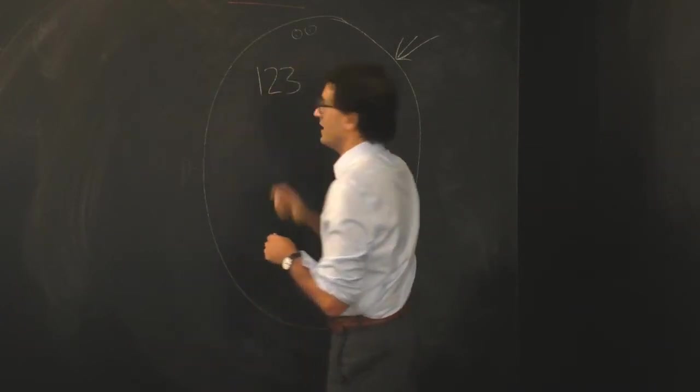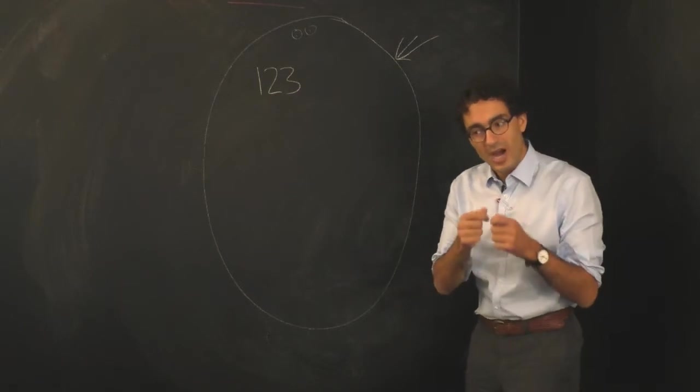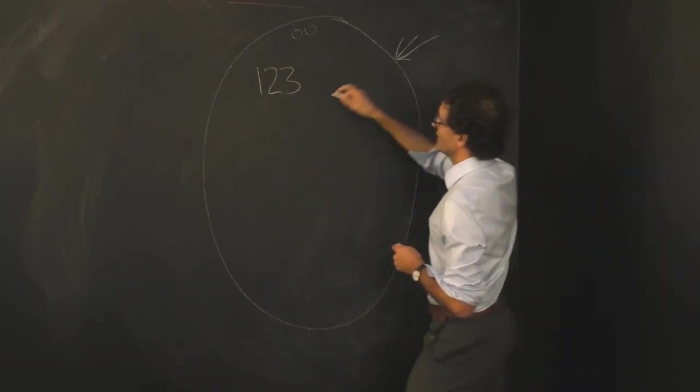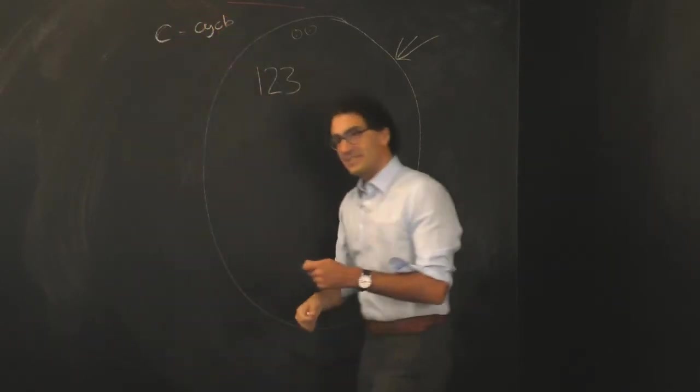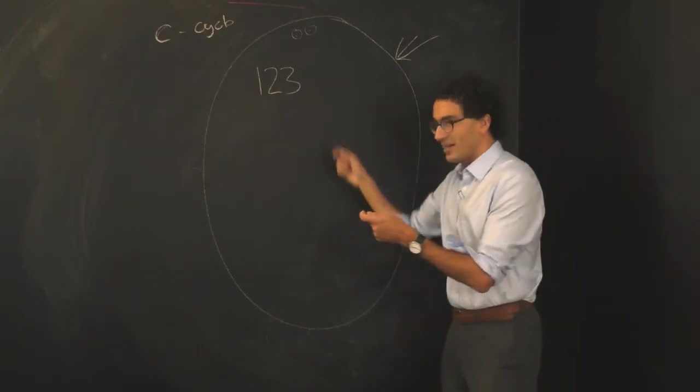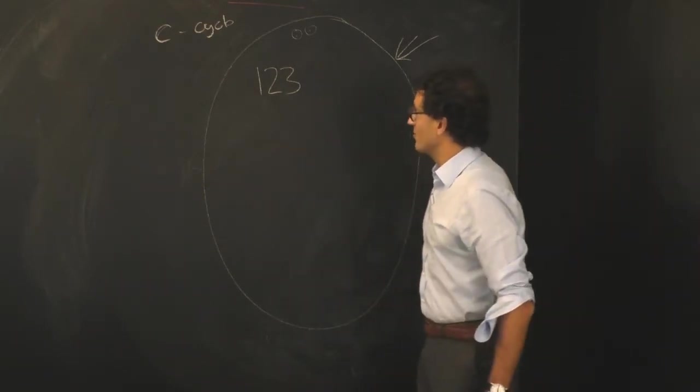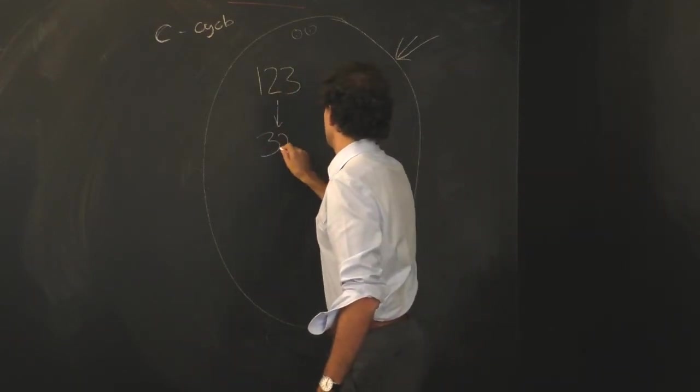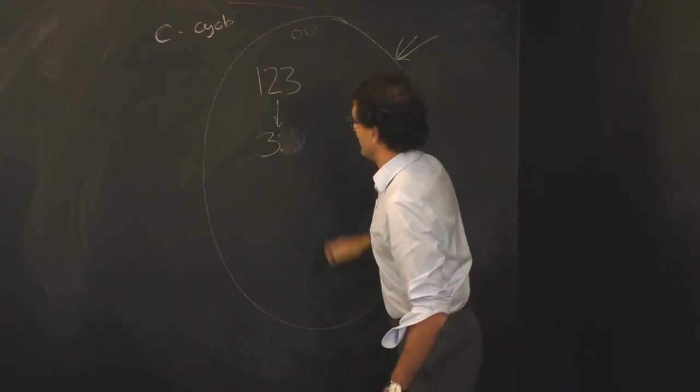I'll label them one, two, and three. And what you can do to this creature is hit it with two operations. I'll give you two operations. One is the cycle operation, C, C for cycle. And what the cycle operation does is you just take the bottom card and you put it on the top. So if I do the cycle operation to this creature, it goes from this state here to this state here.